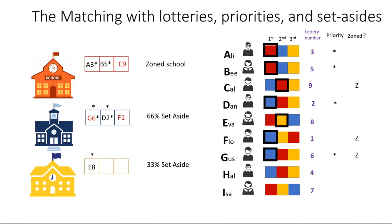The next student without an assignment is Hal. Hal also wants the blue school, which is currently full. Hal's lottery number is better than that of Gus, however Gus is a priority student. Right now 66% of seats are given to priority students, and Hal is not a priority student. So Hal cannot displace Gus from the blue school despite having a better lottery number. So Hal doesn't get the blue school. Hal's next choice is the red school. Hal is not zoned for the red school. Hal has a better lottery number than Cal, but Cal is zoned, so Cal has priority over Hal and Hal cannot displace Cal. However, Hal can displace B, who has a worse lottery number than Hal and is not zoned — they are in the same priority group with respect to the red school.